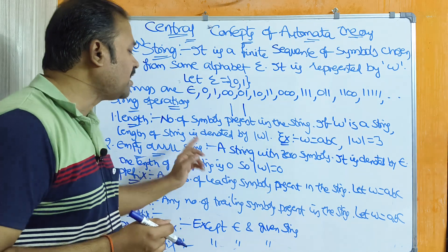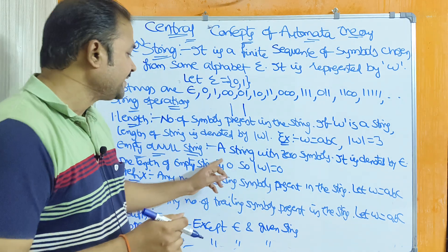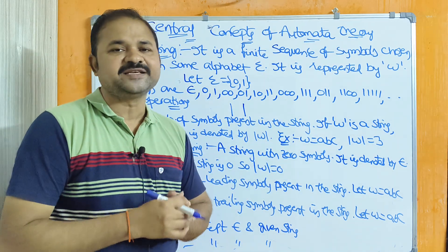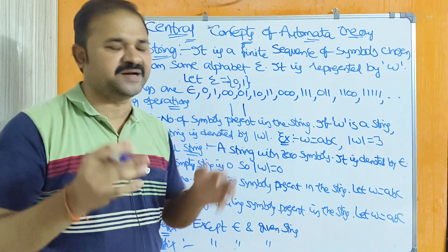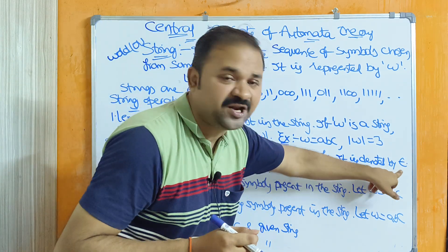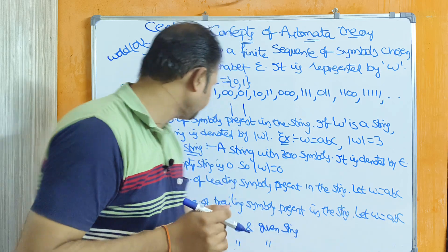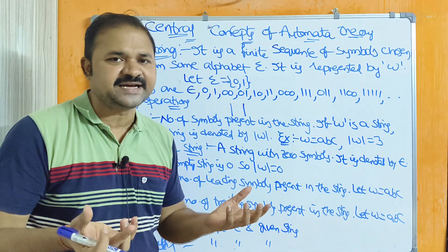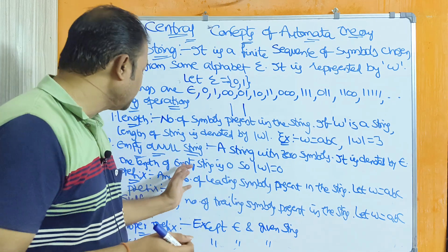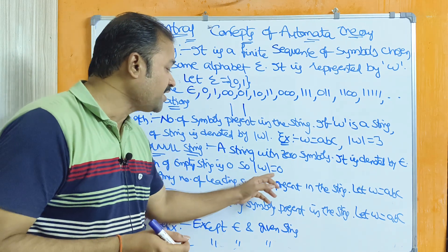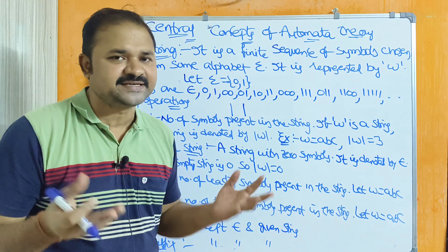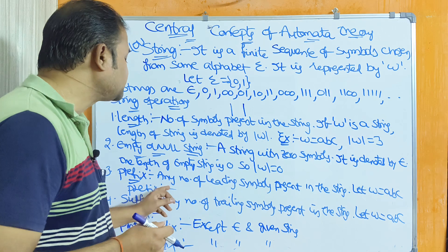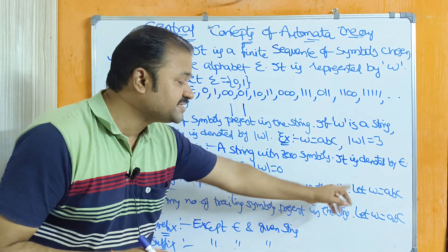The second operation is empty string or null string. A string with zero symbols is called as empty string or null string. It is denoted by epsilon. The length of the empty string is zero, because empty string doesn't contain any symbols. So if w is the empty string then |w| is equal to zero.